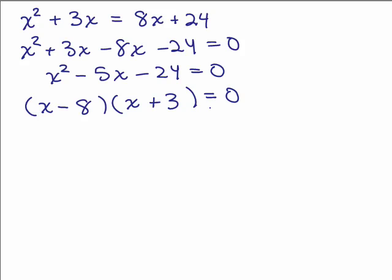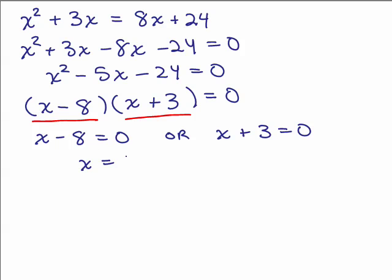Now we take each factor that contains a variable. So I take each factor containing a variable and set it equal to zero, because either this factor better be zero or that factor better be zero. X minus 8 equals zero or X plus 3 equals zero. Now we have a linear equation. So X equals 8 or X equals negative 3.